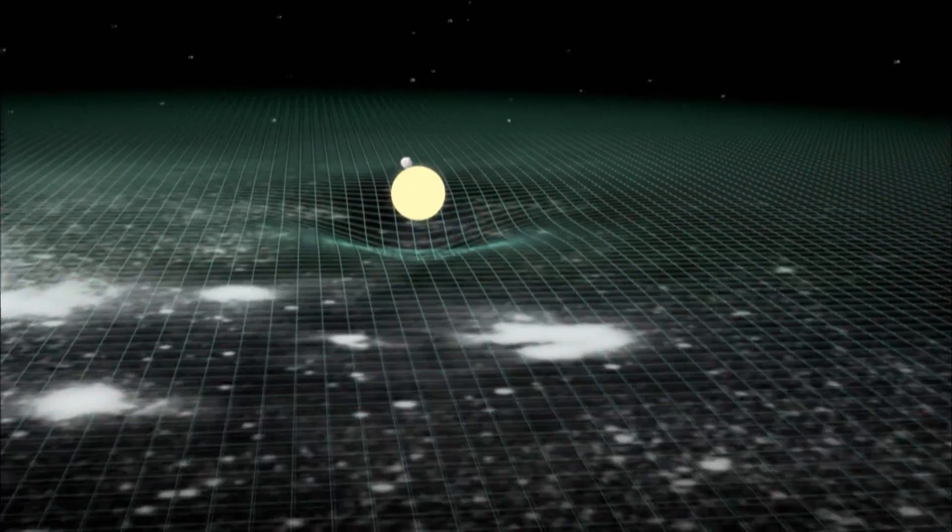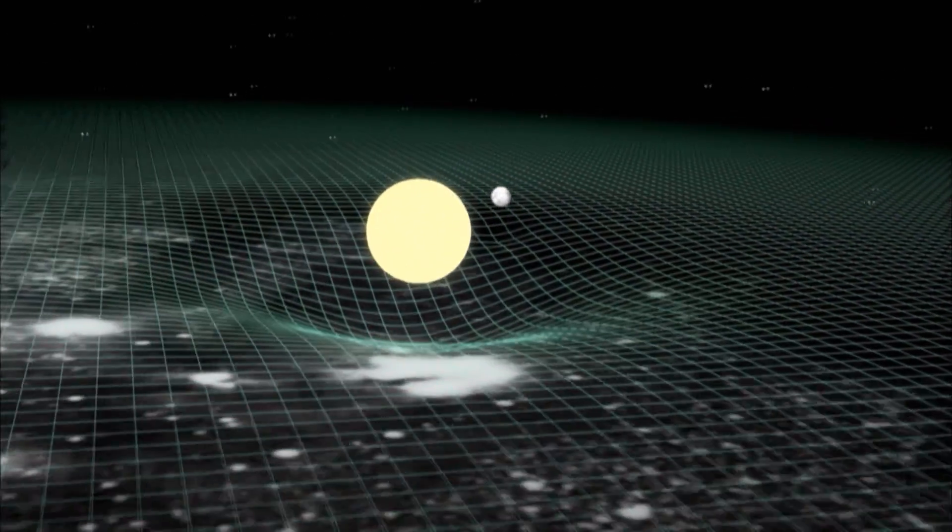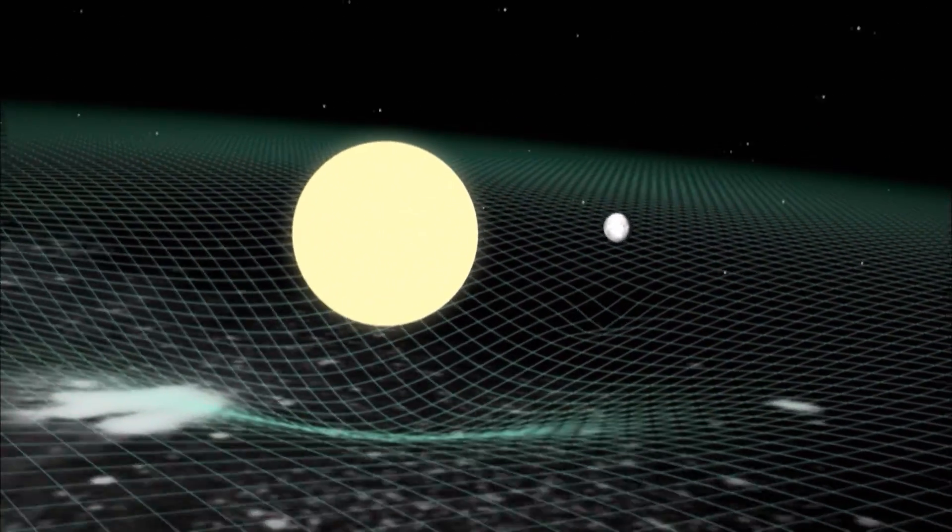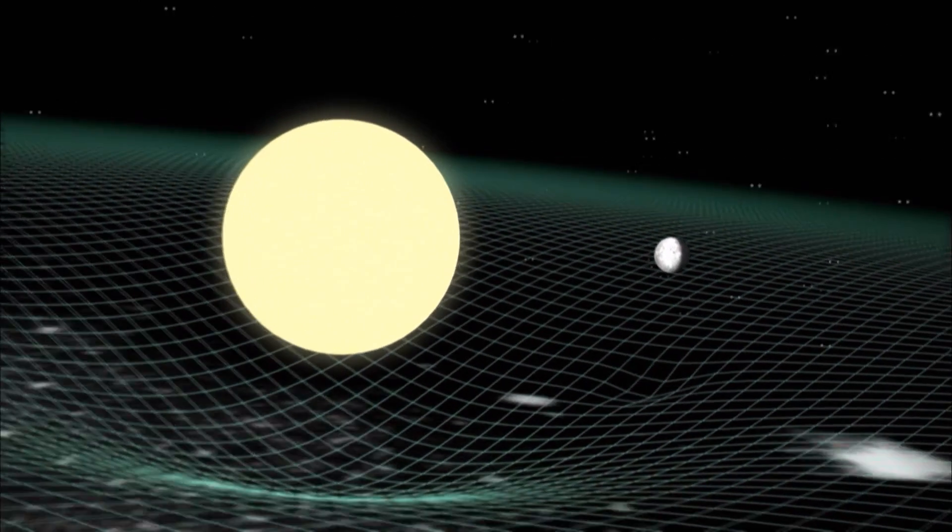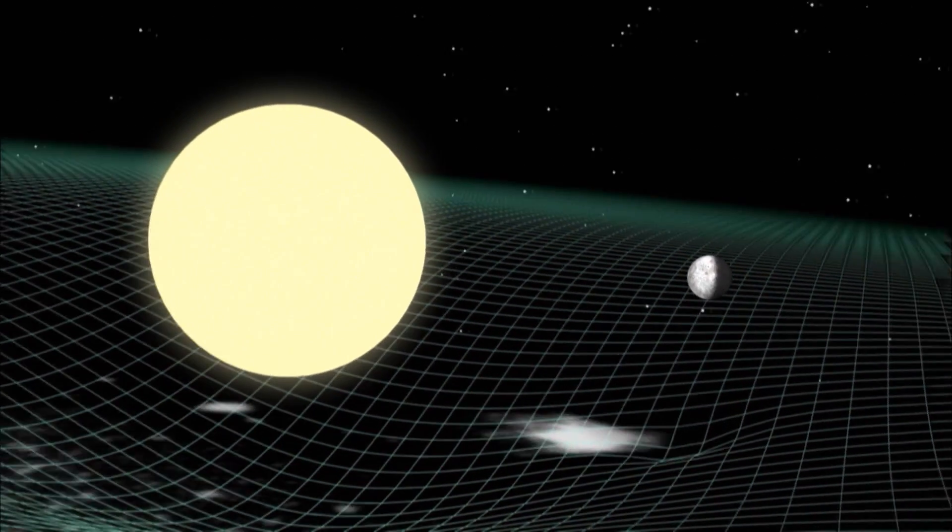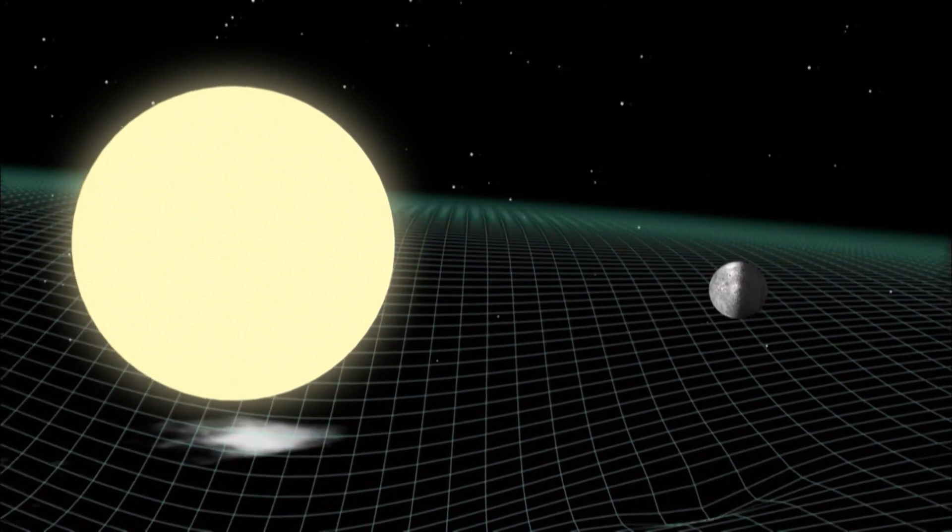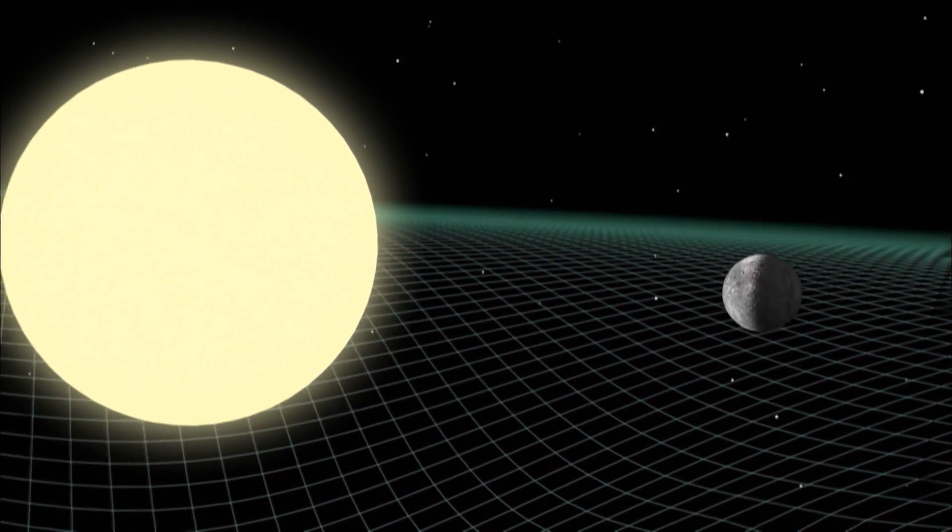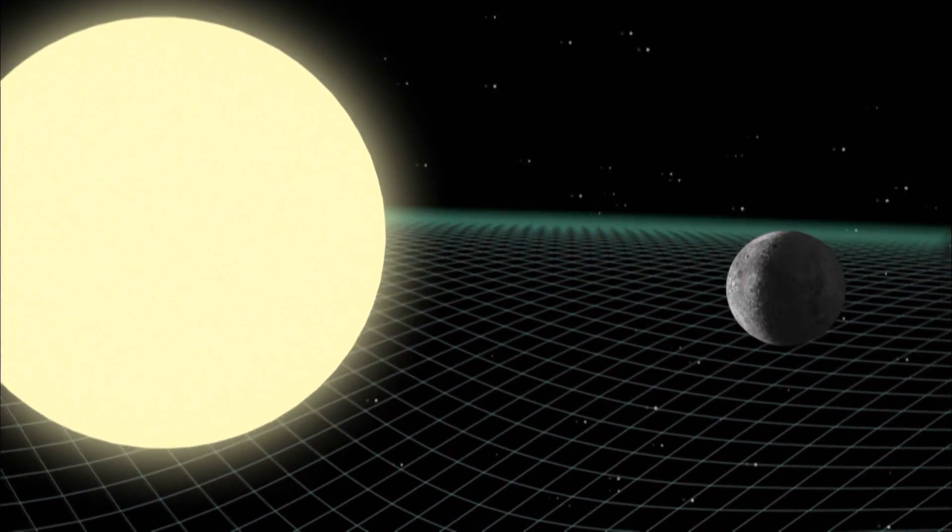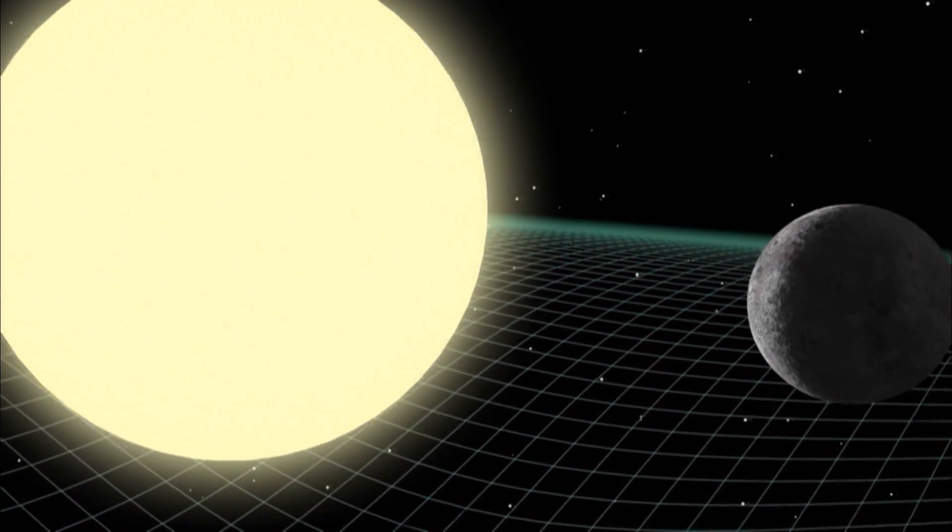It's a warping of space and time, what scientists call space-time, in the presence of massive objects. A planet, for example, goes into orbit when it's caught in the warped space surrounding a star, like a ball spinning around a roulette wheel.